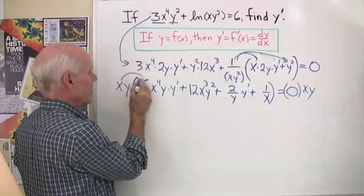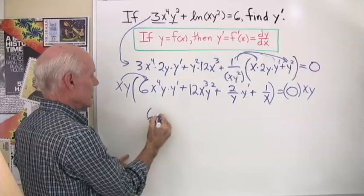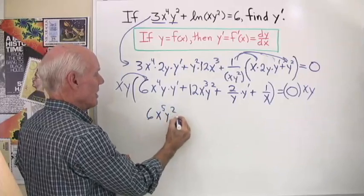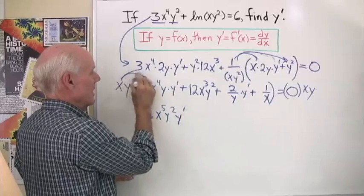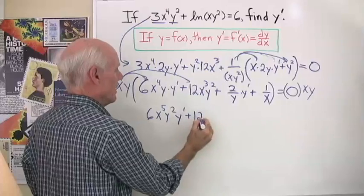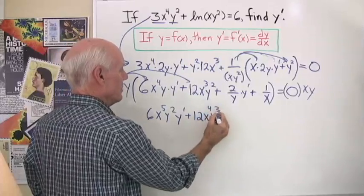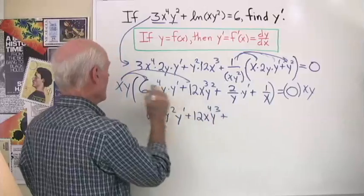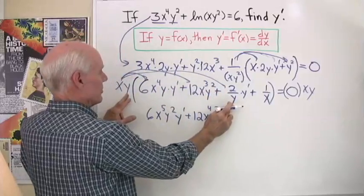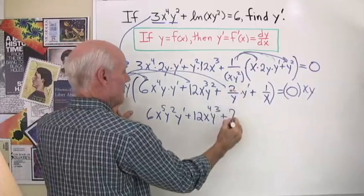So xy times 6x to the fourth y gives 6x to the fifth y squared times y prime. Then xy times 12x to the third y squared gives 12x to the fourth y cubed. And xy times 2 over y — the y's divide out — gives 2x times y prime.